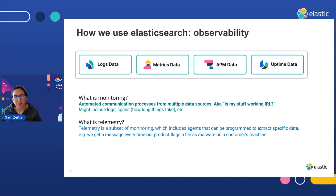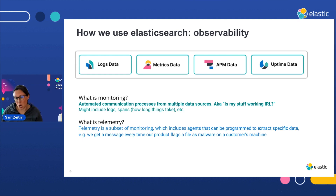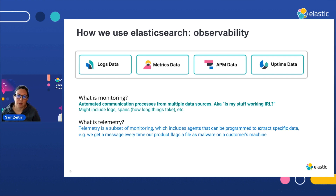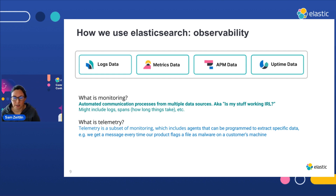We're also making use of Elasticsearch observability products and are in the process of integrating increasing amounts of these features. Right now we use monitoring — logs and other things — and in particular we use a lot of telemetry, which is a subset of monitoring. This is very important for us because it tells us how the product is working on a customer's machine. So every time the model flags a file as malware, we get a message from telemetry, which is really important for us to improve model performance over time.